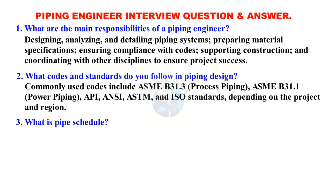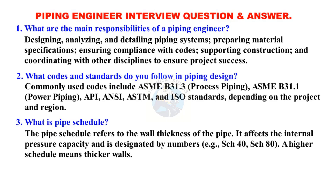What is pipe schedule? The pipe schedule refers to the wall thickness of the pipe. It affects the internal pressure capacity and is designated by numbers — for example, Schedule 40 or Schedule 80. A higher schedule means thicker walls.